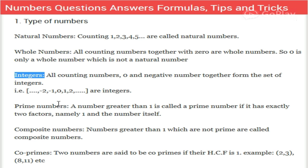Prime numbers: a number which is greater than one is called a prime number if it has exactly two factors - one and the number itself. It is not divisible by any other number. For example, three, five, seven, eleven.